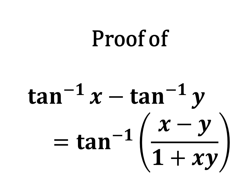In this video, we will learn to prove the trigonometry identity: inverse of tangent of x minus inverse of tangent of y is equal to inverse of tangent of (x minus y) upon (1 plus x times y). It can also be said as arctangent of x minus arctangent of y equals arctangent of (x minus y) upon (1 plus x times y), as inverse of tangent is also known as arctangent.